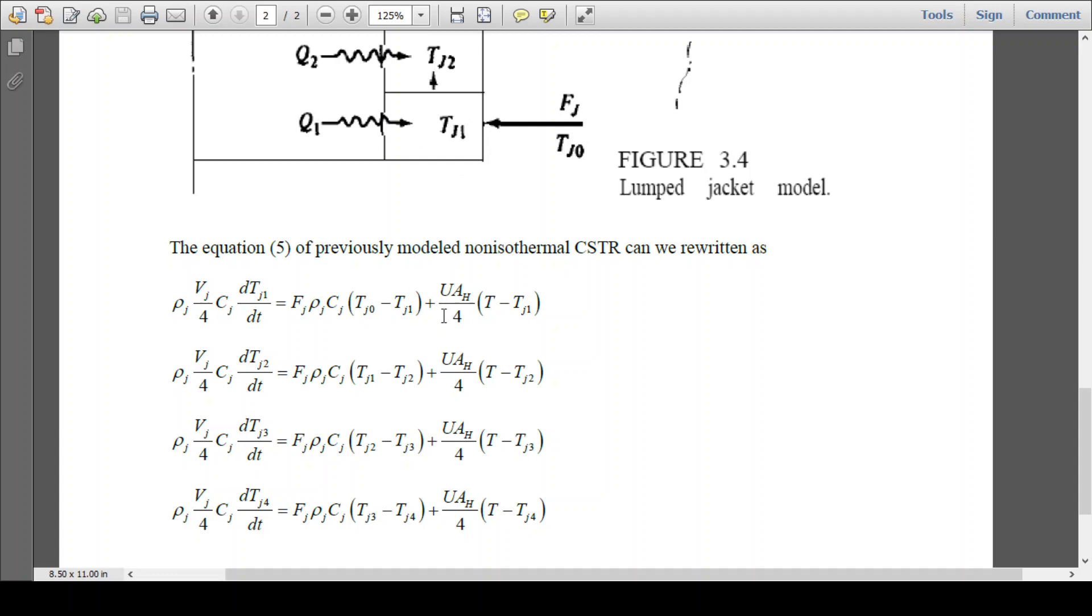This segment is getting the energy UAh/4. So Ah is total heat transfer area. So here we have divided it by 4. T minus tj1. So T is temperature of the metal wall or the reactor wall. Tj1 is the perfectly well mixed temperature of the jacket.